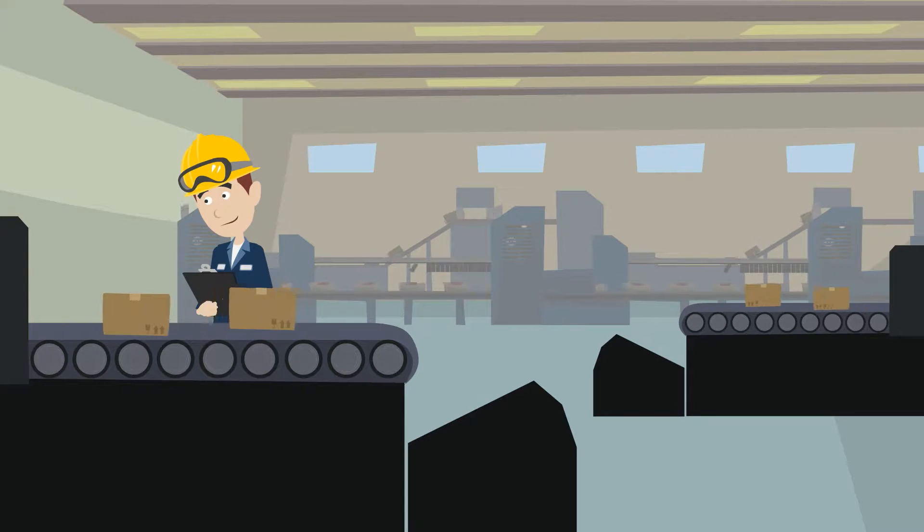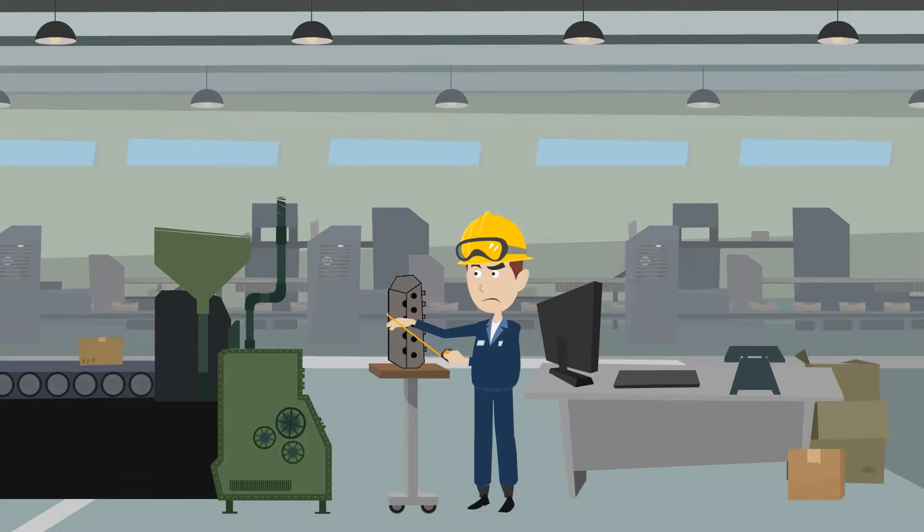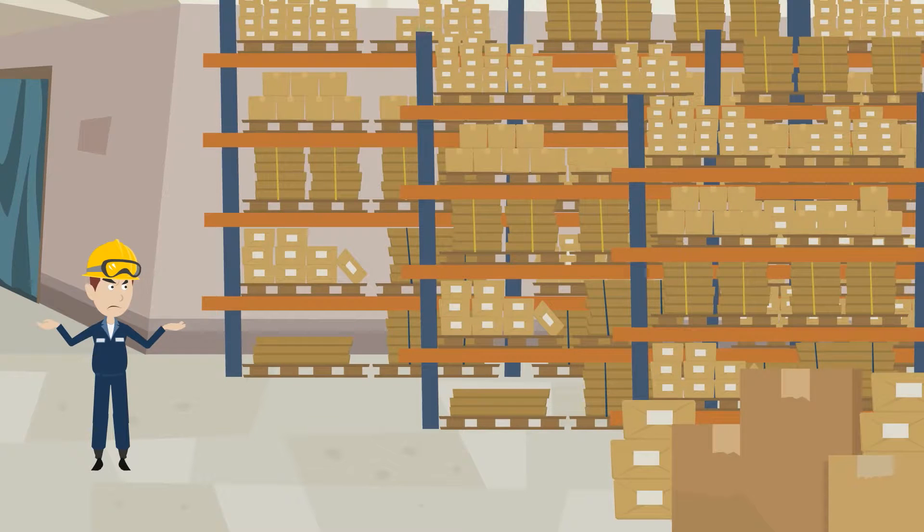This is James. James is the company's quality engineer. He inspects every part manually, resulting in a backlog of inventory.